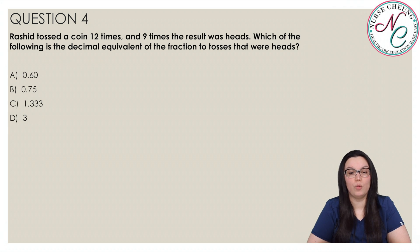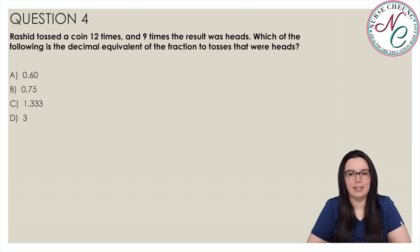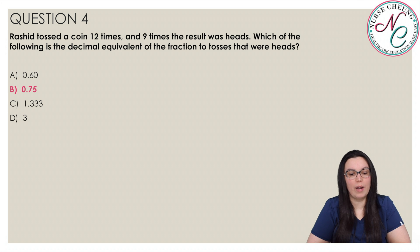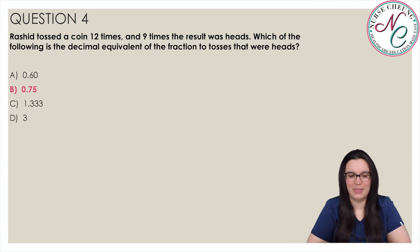Rashid tossed a coin 12 times and 9 times the result was heads. Which of the following is the decimal equivalent of the fraction of tosses that were heads? Was it A, 0.6; B, 0.75; C, 1.333; or D, 3? The correct answer is B, 0.75. We write 9 heads out of 12 throws as 9 over 12, which reduces to 3 over 4. Then 3 divided by 4 equals 0.75.